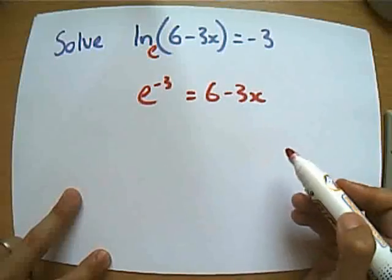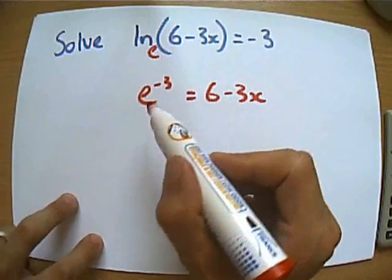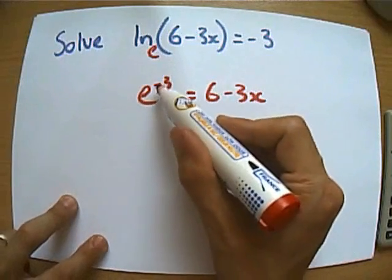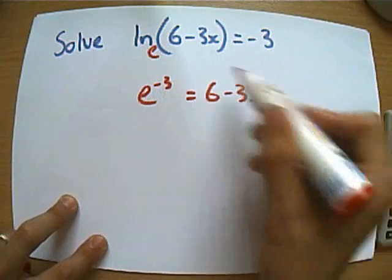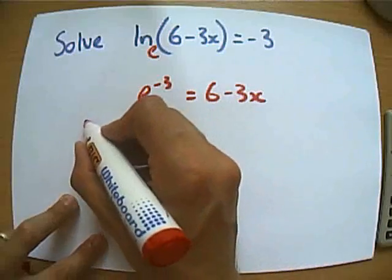So I've turned that into that. e to the negative 3 is just a number, isn't it? You know, 2.71 to the power of negative 3. So let's rearrange this equation. I'm going to take the 3x over on this side.